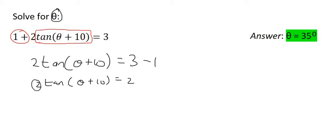Next would be to get rid of this 2 over here. So knowing that there's a multiplication in between there, that's going to give us tan of theta plus 10 equals to 2 divided by 2. And that's going to give us 1.